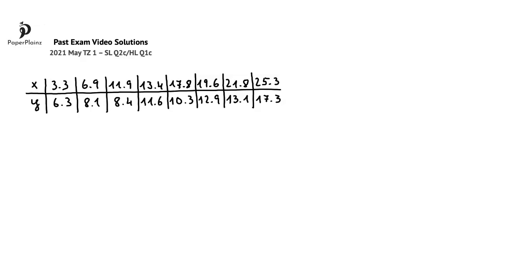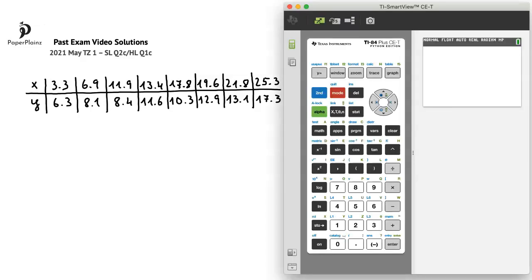We can easily solve this question using our calculator. Of course, you can add up all the x-values and divide the result by the number of x-values (which is 8), and then do the same for y, but there is a quicker method. Let's see this method.